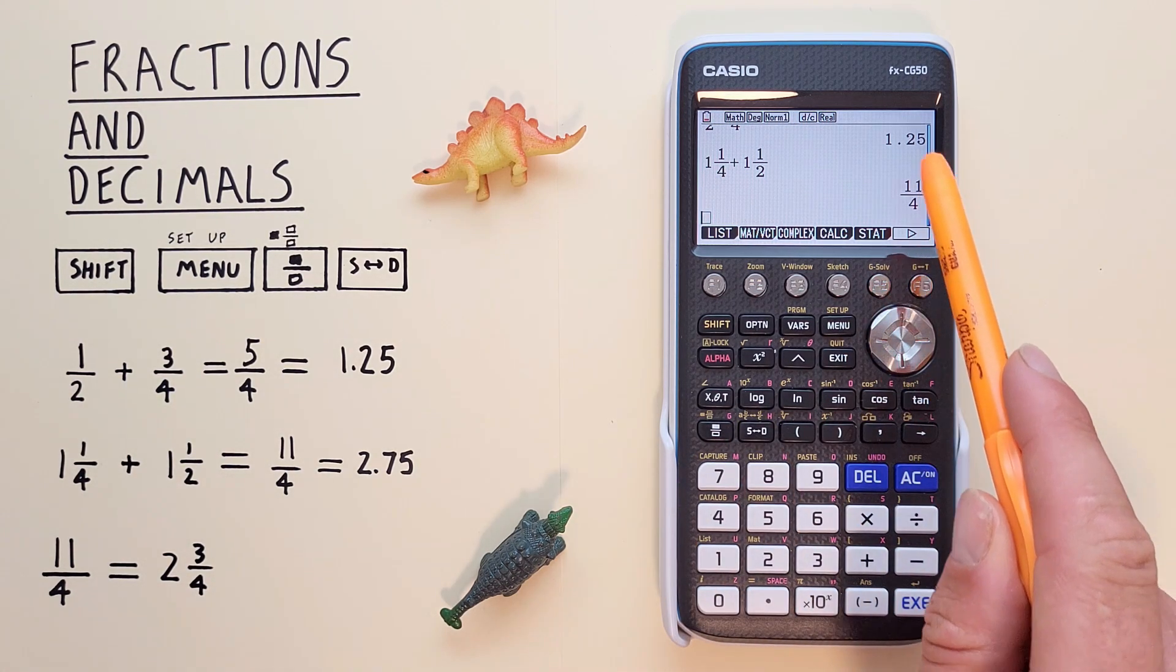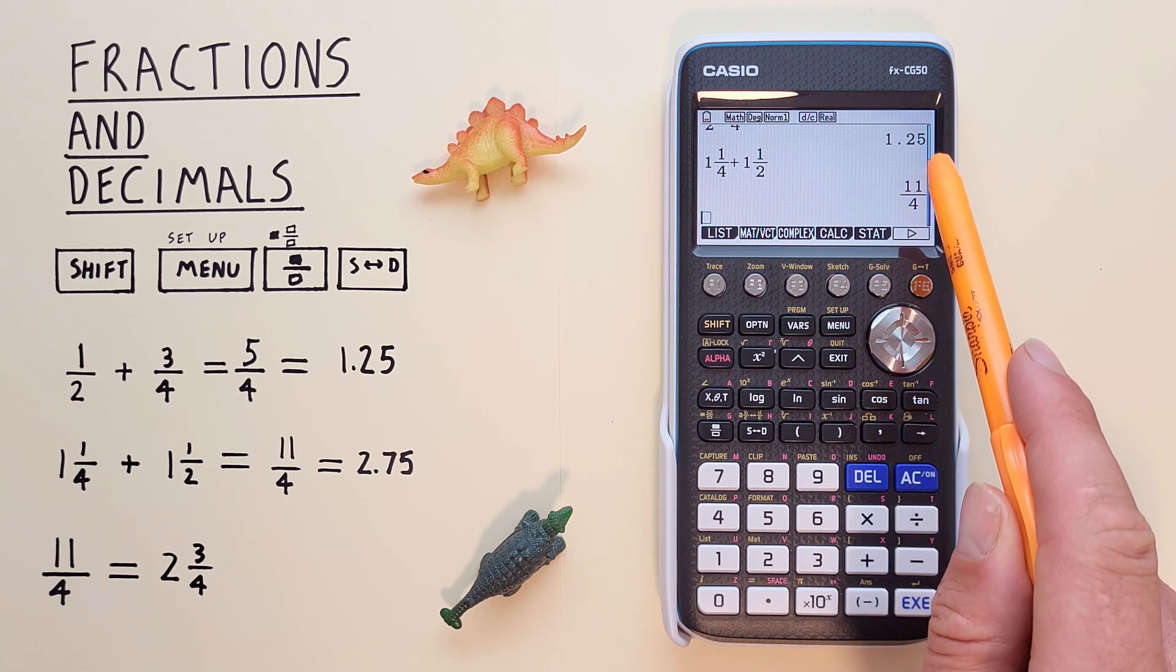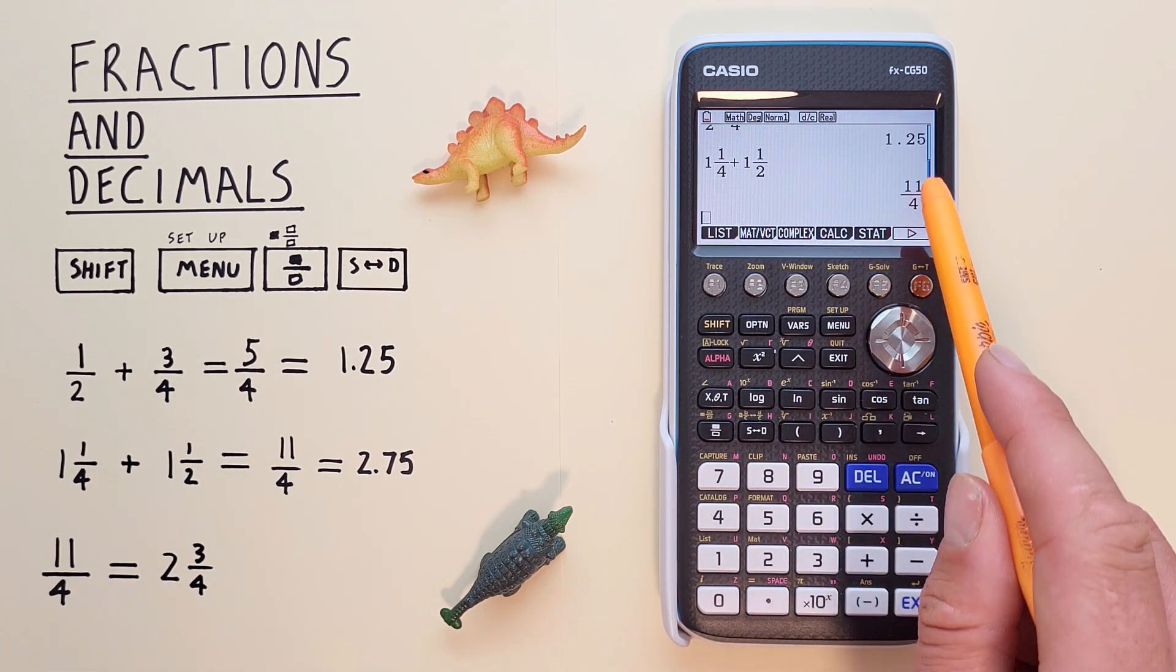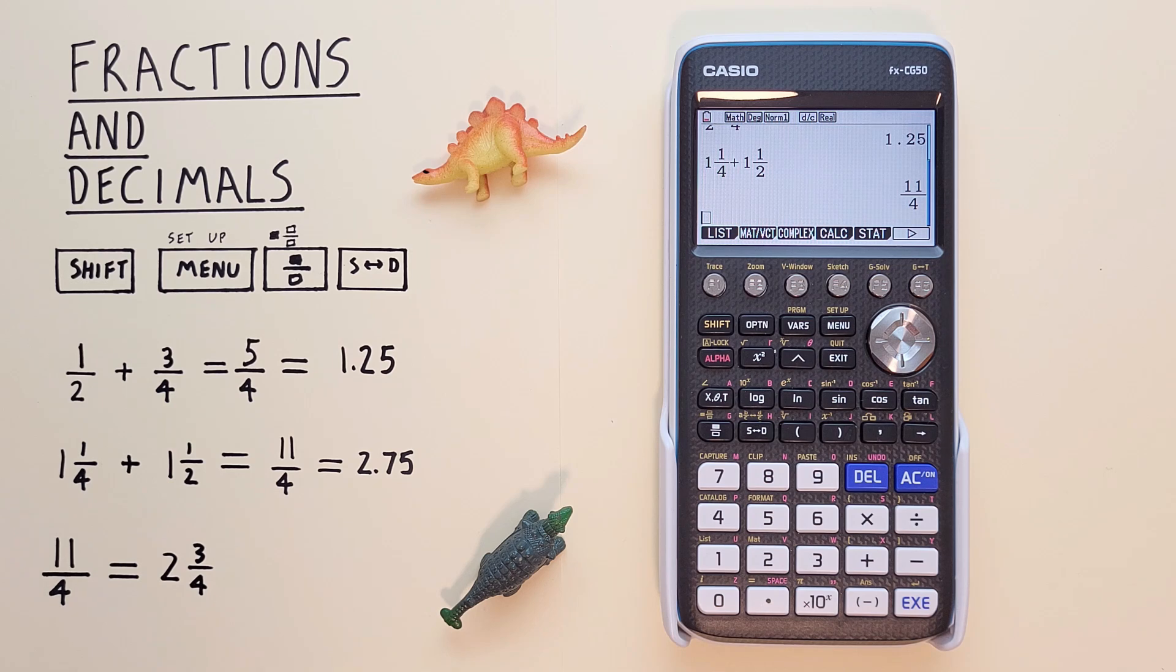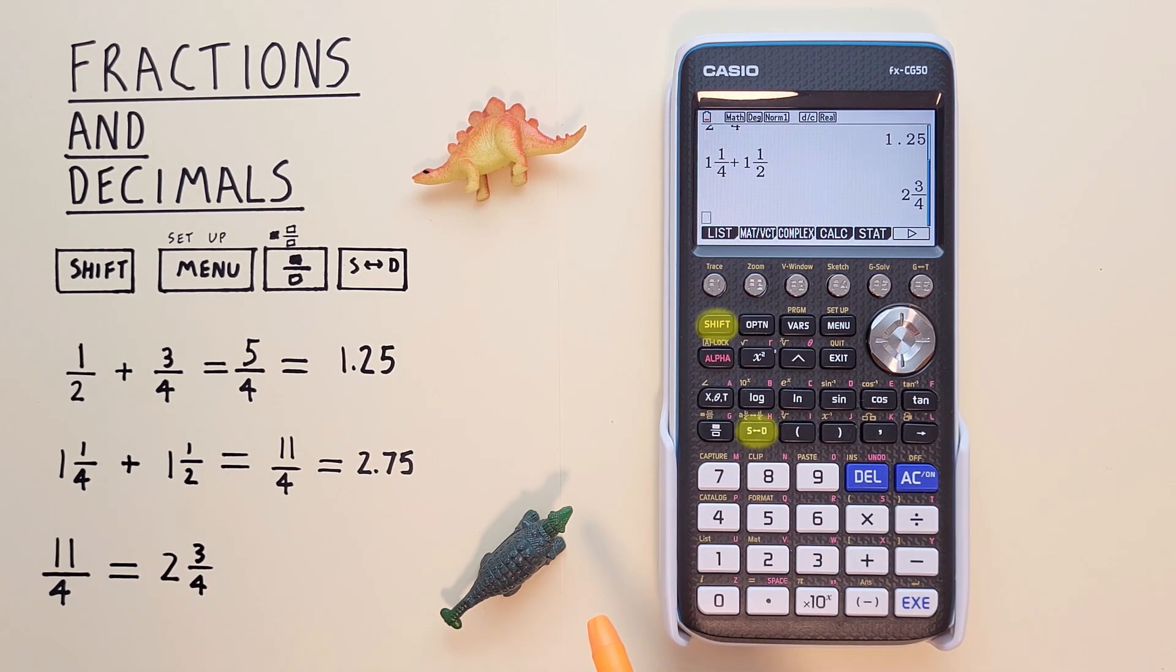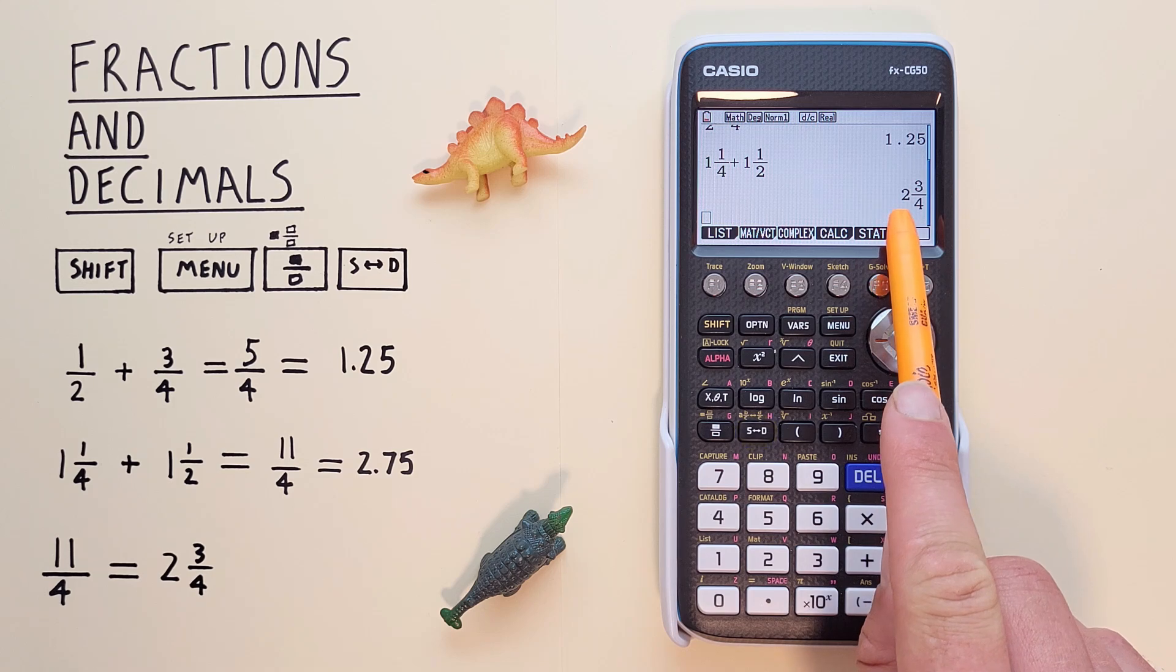But what if we want our result as a mixed number, instead of an 11 over 4 improper fraction? To do that, we use the SHIFT function of the STD or conversion key. So if we have our 11 over 4 already, all we need to do is press SHIFT STD.